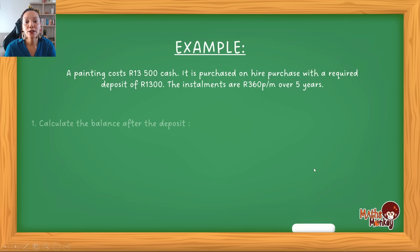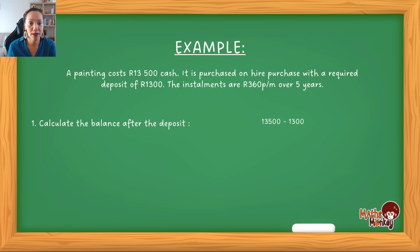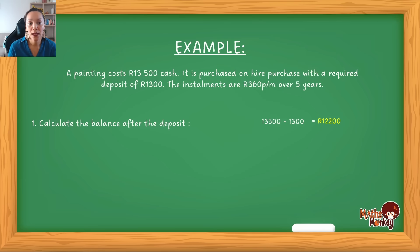Let's look at the possible questions they can ask. First: calculate the balance after the deposit — how much do you owe once you put the deposit down? That's a simple calculation: R13,500 minus the deposit of R1,300 equals R12,200. That's the actual amount you owe for the painting without the interest when you leave the shop.